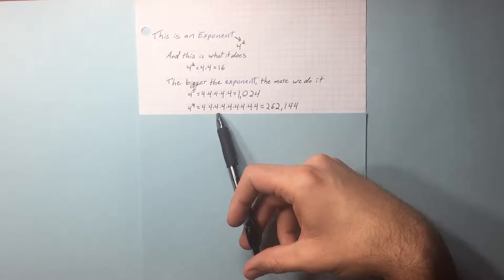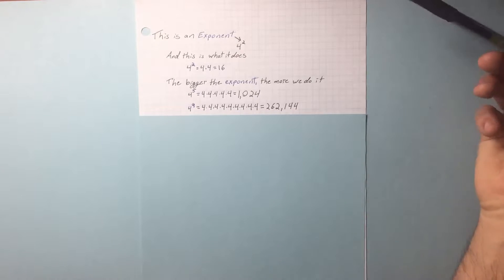4 to the 9th, that's 4 times itself 9 times. Cool? So that's how exponents work.